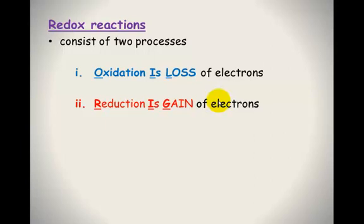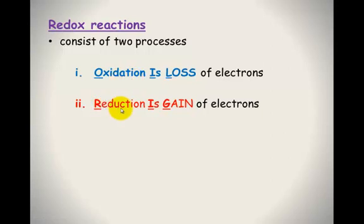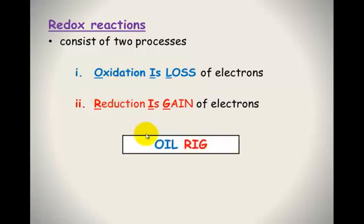Electrons can't just fly around willy nilly through the air. There has to be something that receives the electron and something that gives up the electron. So the process that loses electrons is called oxidation, and reduction is the gain of electrons. There is a really simple way of remembering that: OIL RIG. Oxidation is loss, reduction is gain — and that's of the electrons.